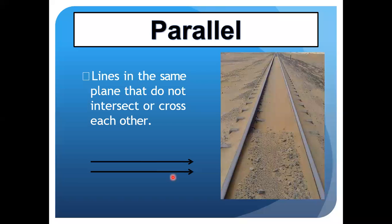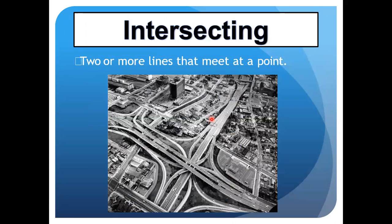Now we move on to intersecting lines. You can see a picture of roads on your screen — different roads that meet up and cross each other. Intersecting lines are two or more lines that meet at a point. Roads crossing at a junction are the best example of intersecting lines.